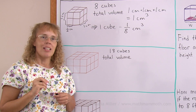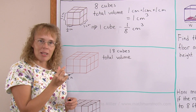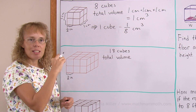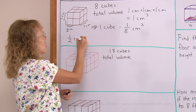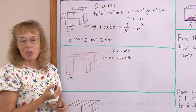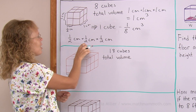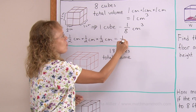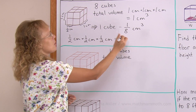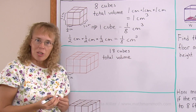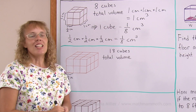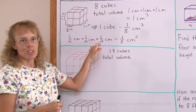Notice, if we take one of those cubes and find its volume by multiplying the length, width, and height, I would get half a centimetre times half a centimetre times half a centimetre. And this also is one-eighth of a cubic centimetre. Half times half times half is one-eighth. Either way you solve it, you get one-eighth of a cubic centimetre. My point is to show you that we can indeed multiply the fractions to get the volume.